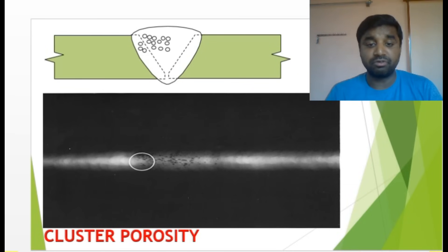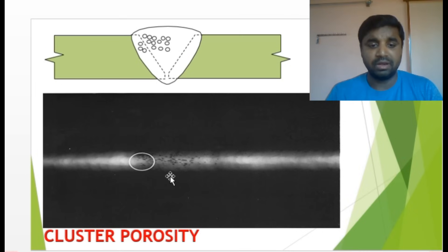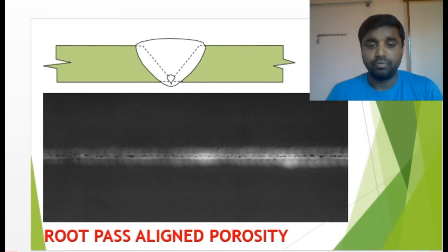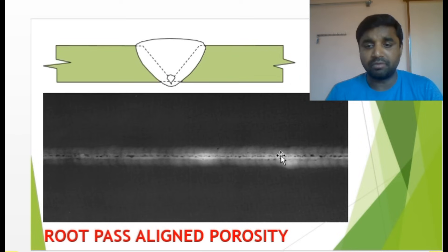Cluster porosity — you can see how it looks, and it is very easy to recognize. Root path elongated porosity — here is the root path with a pore that is continuous from beginning to end. That is how aligned porosity looks in the root path.